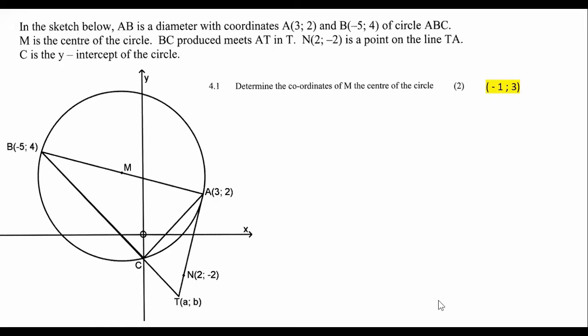Question 4.1 says determine the coordinates of M, which is the center of the circle. Maybe I should have read this first. In the sketch below, AB is the diameter. So AB is the diameter. M is the center of the circle. Fantastic. C is the Y-intercept of the circle. I guess those are the important things.